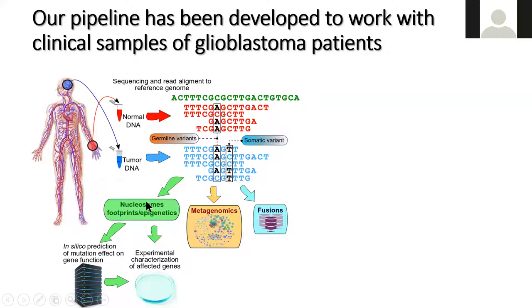The analysis covers mutations and SNPs, nucleosome positioning to find tissue of origin via epigenetics, metagenomics for viruses, bacteria, and pathogens, and fusions. For fusions, we use our database developed in the Alfonso lab and further updated in my lab - overall we have 150,000 different fusions observed in human cells and cancers, used as a basic database to search all possible fusions.